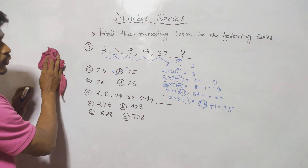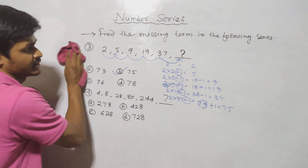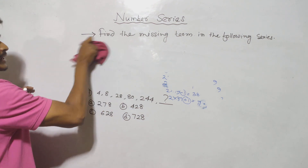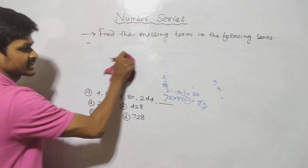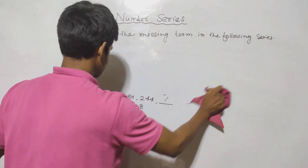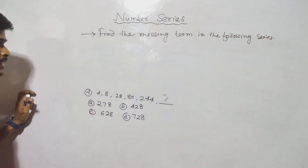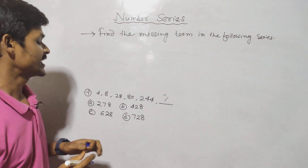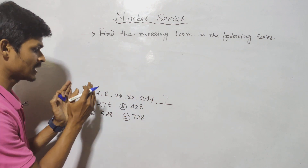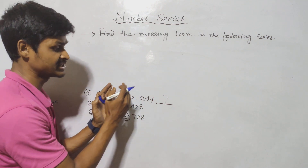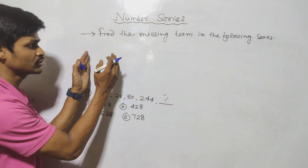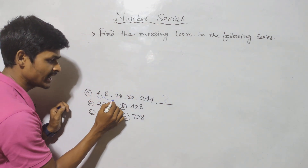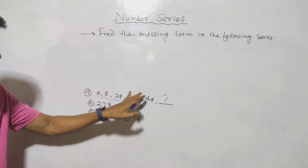Next question is number 4. We have to practice. The series is: 4, 8, 28, 80, 244. This number involves a pattern.